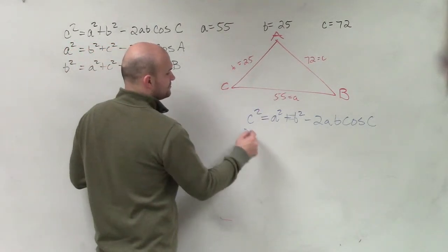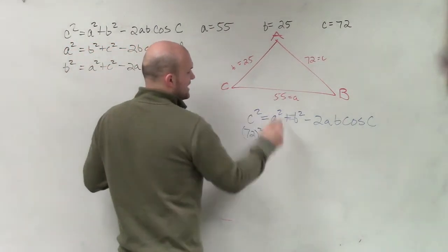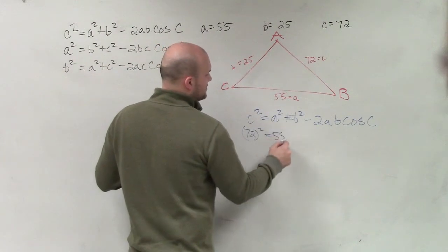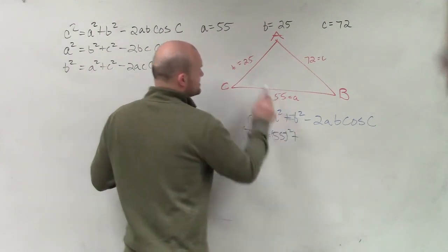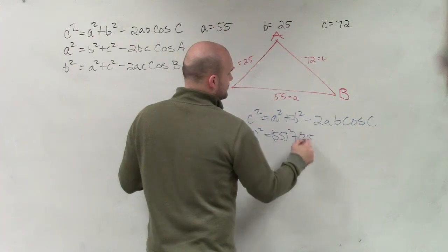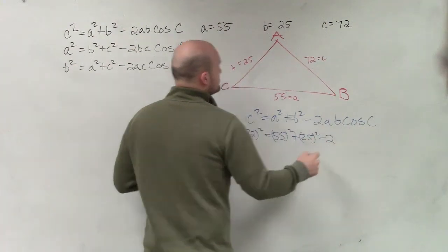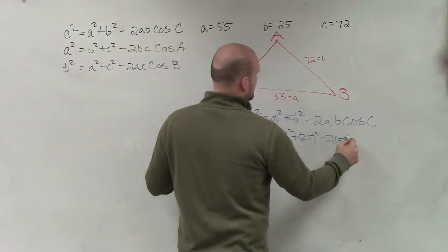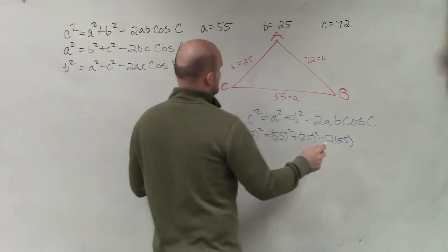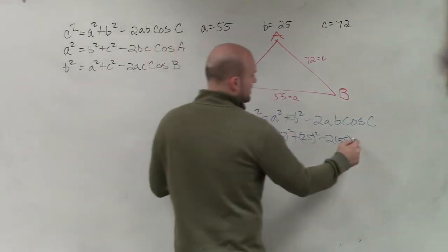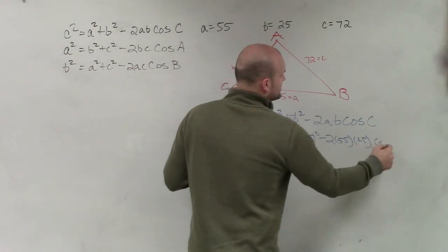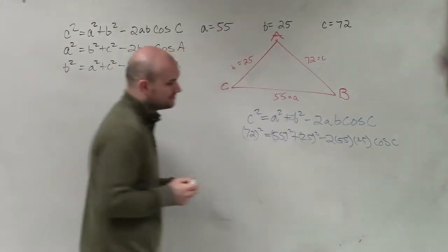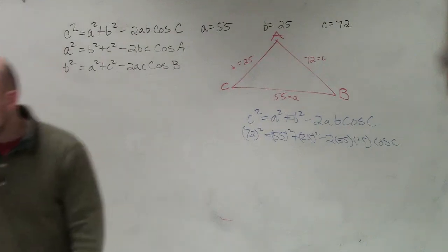C squared equals a squared plus b squared minus 2 times a times b times the cosine of C. So therefore, C is 72 squared equals a squared, which is 55 squared, plus b squared, which is 25 squared, minus 2 times 55 times 25 times the cosine of C, which we're trying to solve.